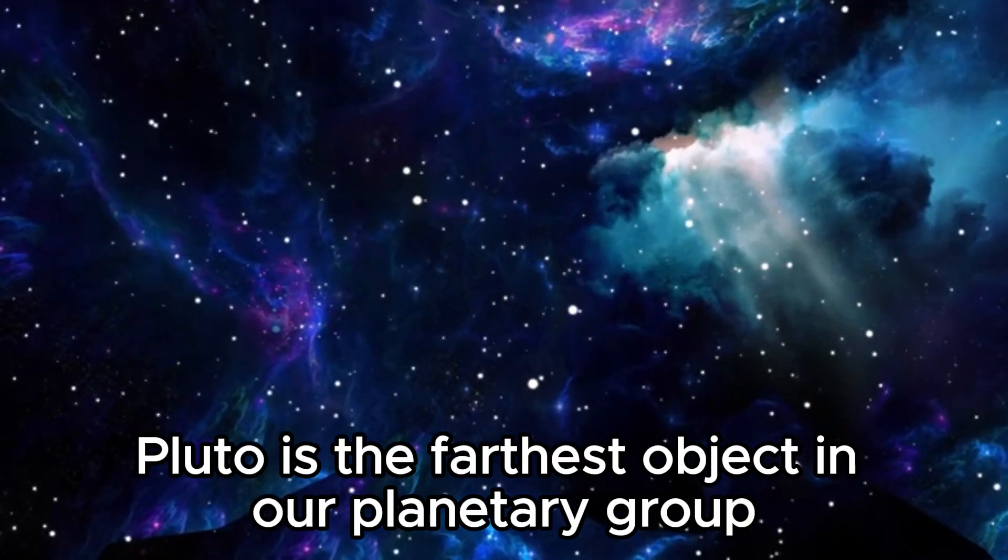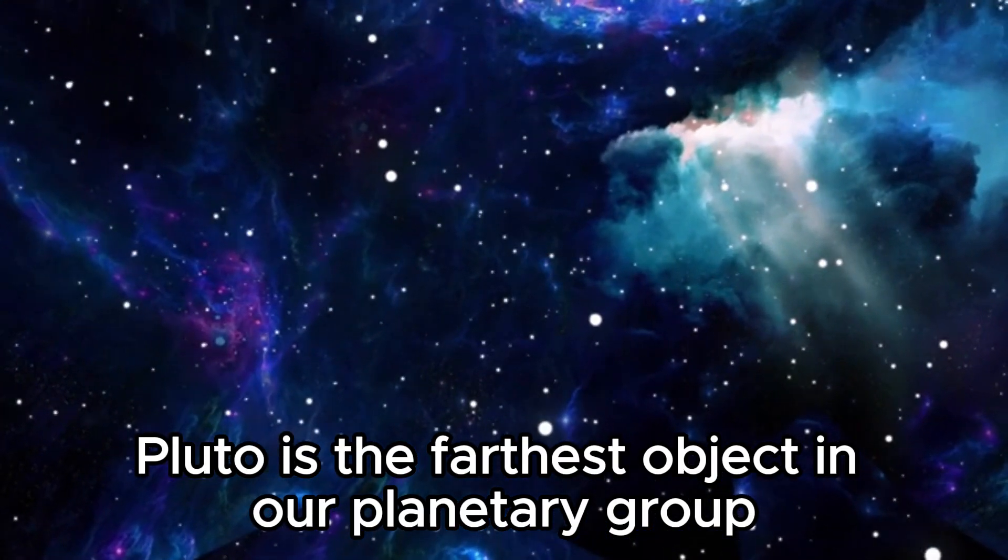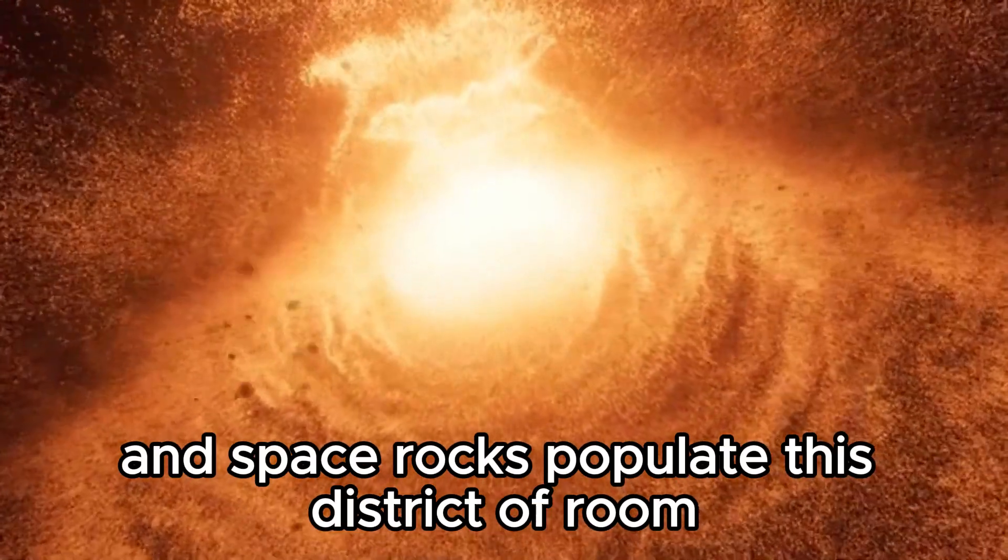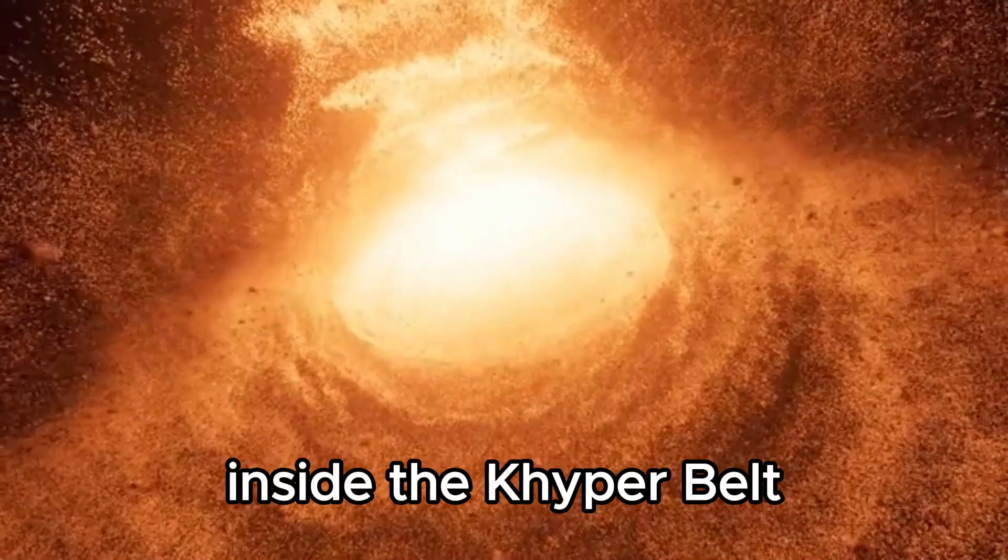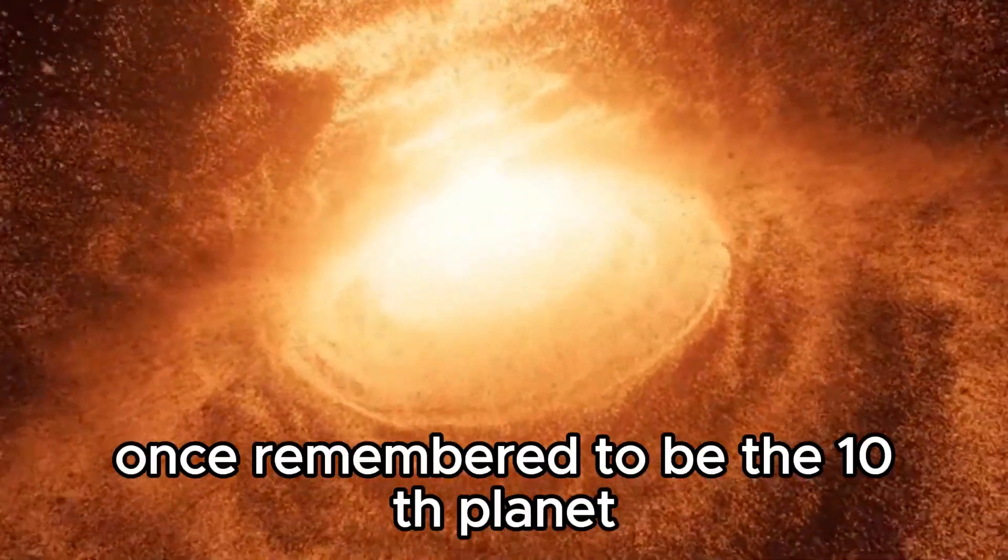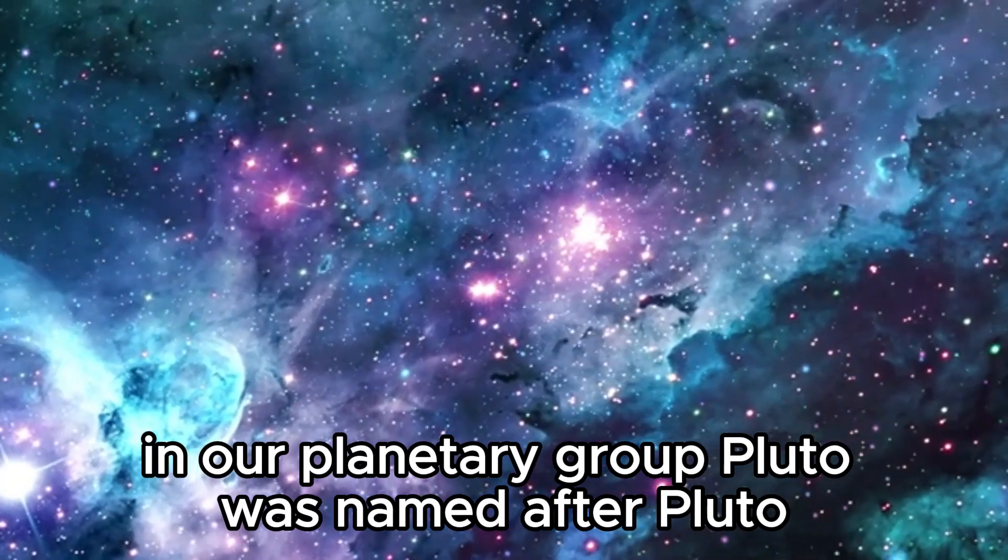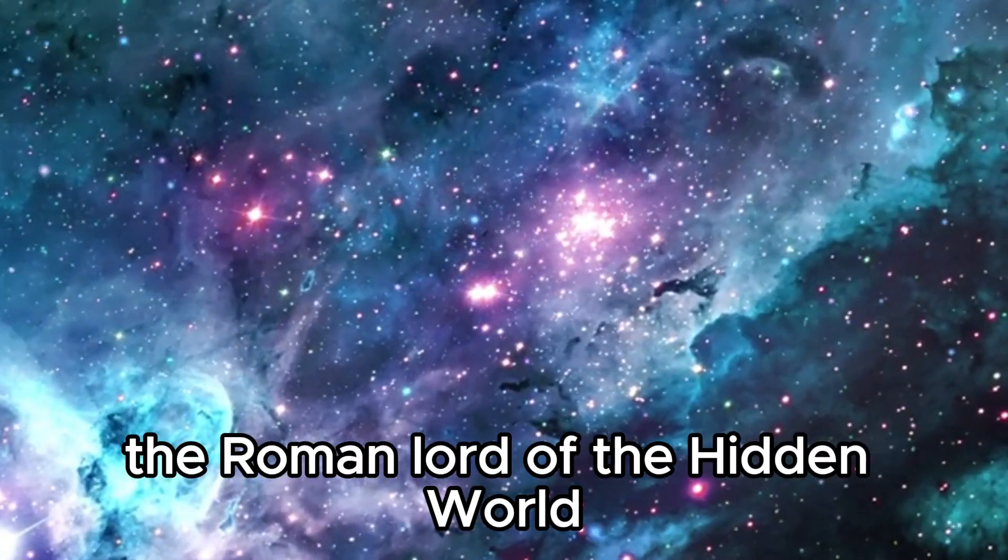The dwarf planet Pluto is the farthest object in our solar system. Many thousands of minor cold planets and asteroids populate this region of space within the Kuiper belt. Once thought to be the tenth planet in our solar system, Pluto was named after the Roman god of the underworld.